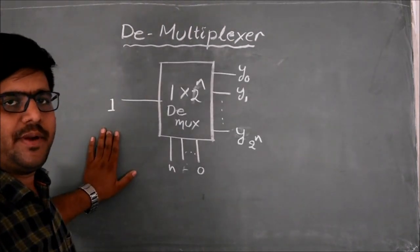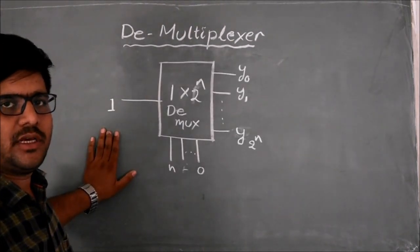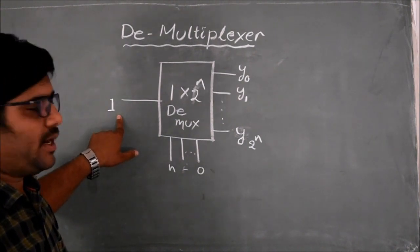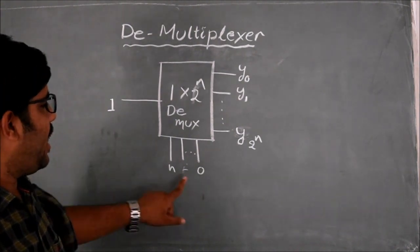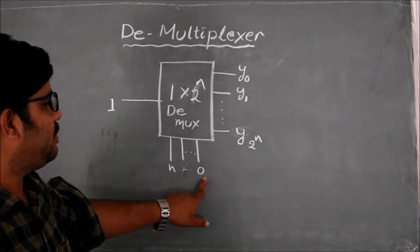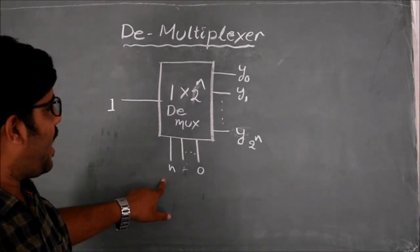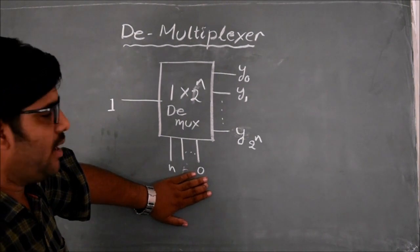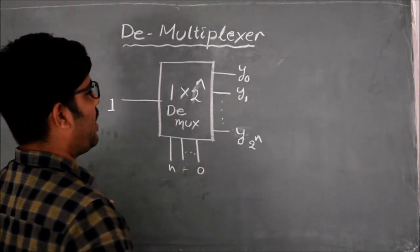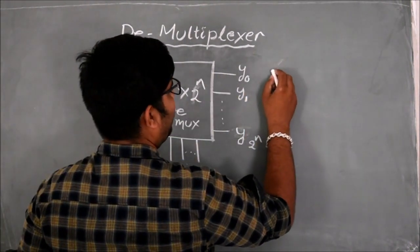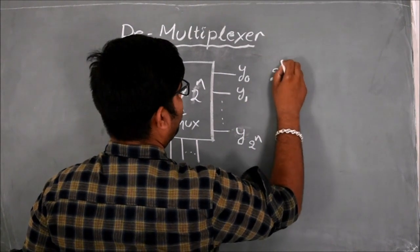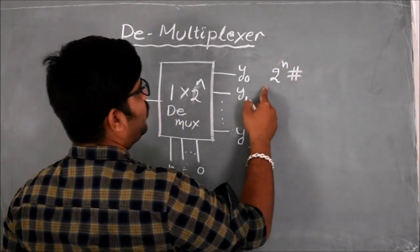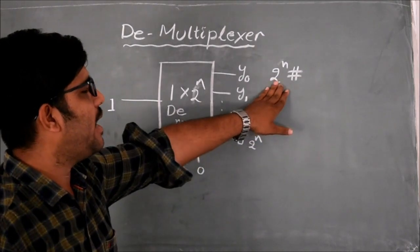This is the basic block diagram of a D-multiplexer where you can see we have one input line on the left side and n number of selection lines from 0 to n. According to the number of selection lines, we have output lines. Total output lines is equal to 2 to the power n. So if there are 2 to the power n number of output lines, then there should be n number of selection lines.